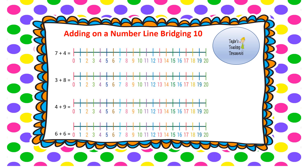This time we're going to look at adding on a number line bridging 10. Bridging 10 is just a fancy way of saying going over that 10 barrier. Our first question is 7 add 4. Start with 7, jump 4 spaces: 1, 2, 3, 4. The number we've landed on is 11, so 7 add 4 equals 11. We've bridged 10 — we've gone over that 10 barrier into the teen numbers.